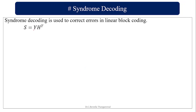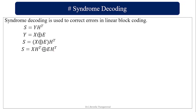Syndrome is given by the formula S = Y · H transpose. Here Y is your received data, that is your transmitted data with error added. The addition of your transmitted data X and error E will give you Y, so I can replace Y as X plus E. This gives X · H transpose plus E · H transpose. Since X · H transpose is always 0, your syndrome S equals E · H transpose.